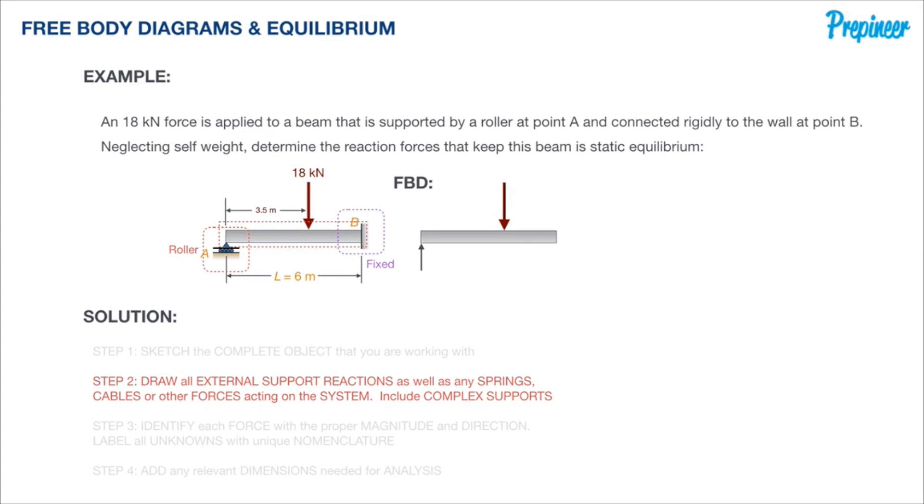In this case, this roller is going to prevent the beam from moving down. It has weight so it's not going to move up. However, it can move side to side and can rotate. That's what roller supports look like. It has zero horizontal resistance, only vertical in this case, so we're placing that vertical force at that location.